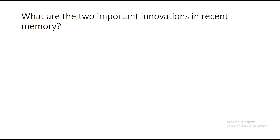Let us find out what are the two important innovations in recent memory. There are two: the securitization process, and structured products which came as a part of the securitization process. Securitization process was the first important innovation, followed by structured products as a result of securitization.